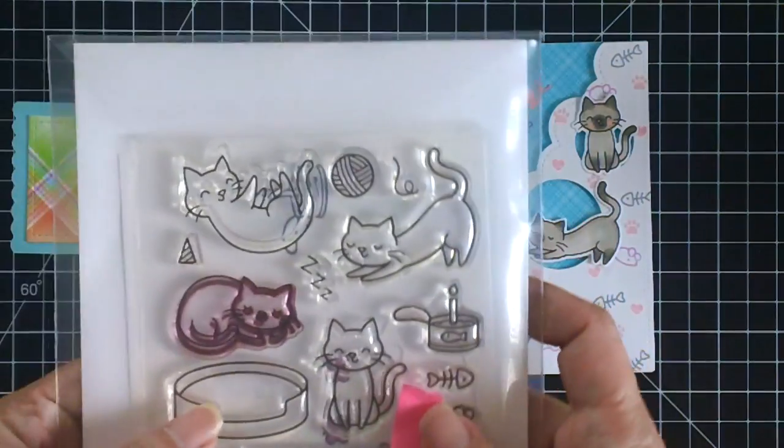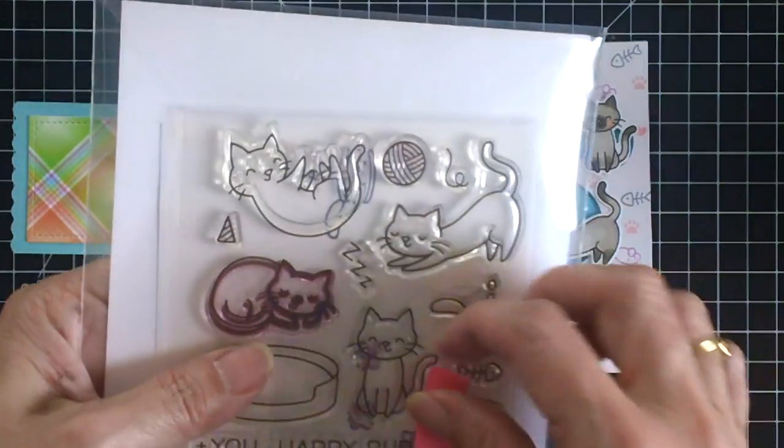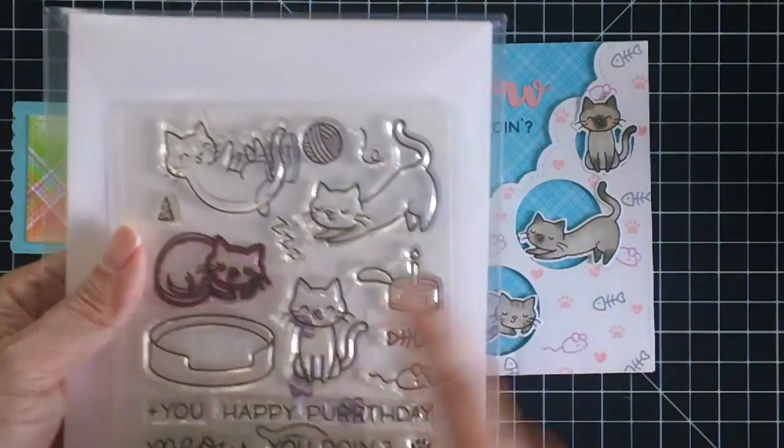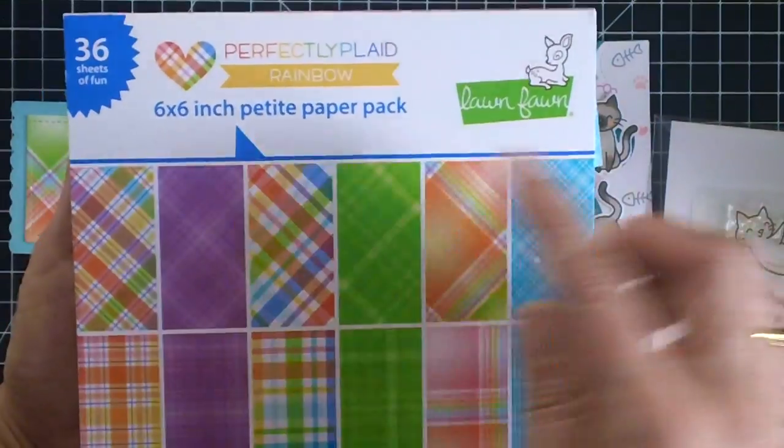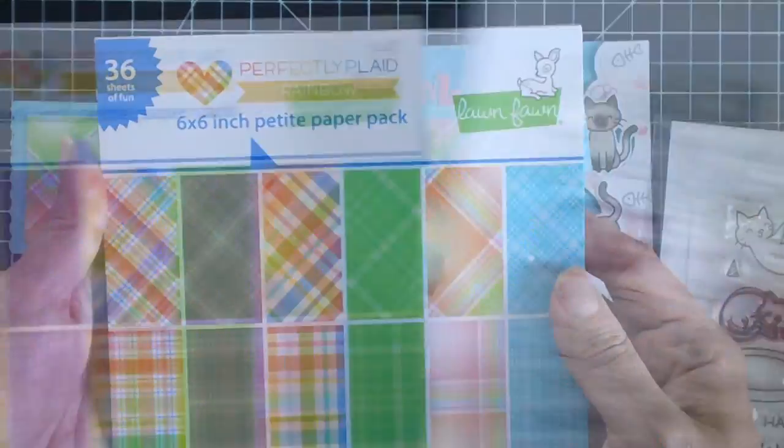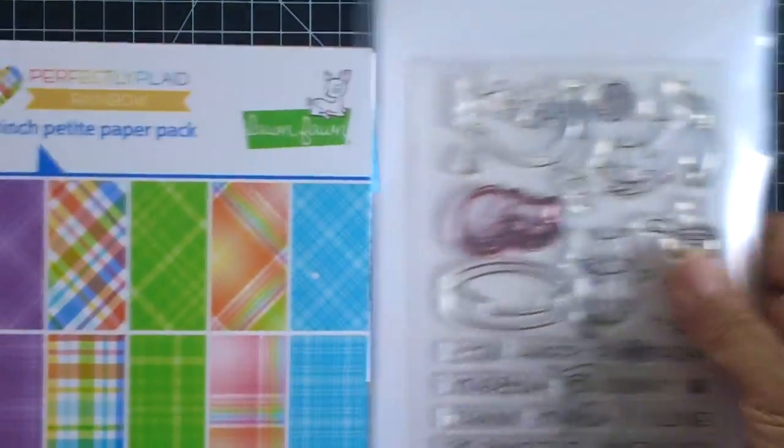Lawn Fawn had actually sent us some products and I picked the meow you doing stamp set. They also sent me a six by six perfectly plaid paper pad. These are the products that I will be showcasing today.